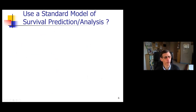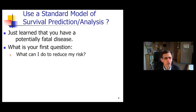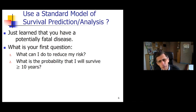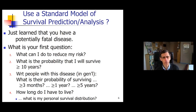To do this, we need to estimate these probabilities, the chances of surviving at least time T for this patient for many different time points. So how do you go about producing a model that does that? Let me talk about standard models of survival prediction and survival analysis. Suppose you just learned you have a potentially fatal disease. What would be the first question you would ask?